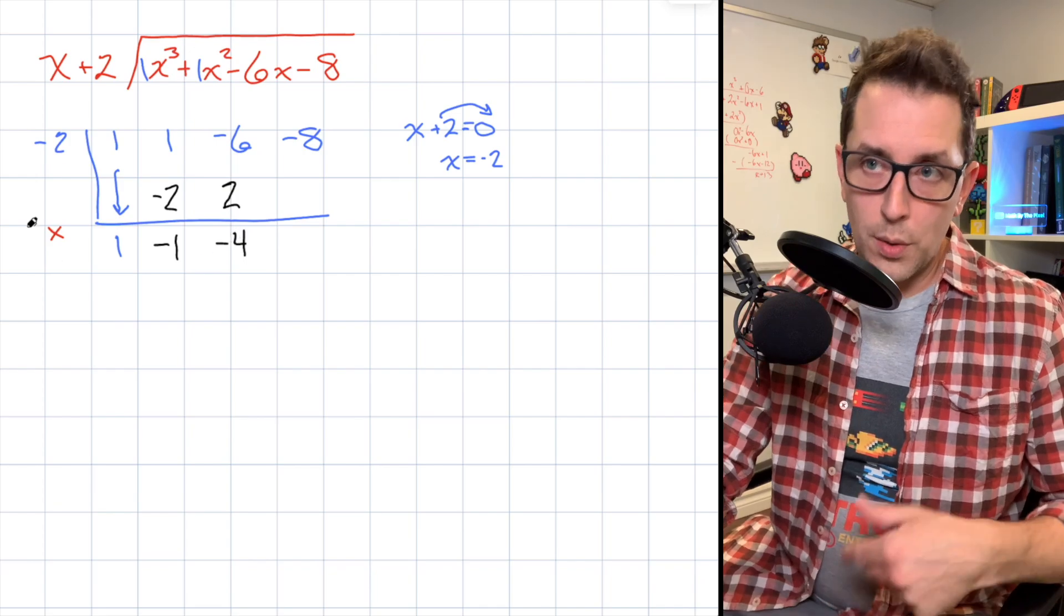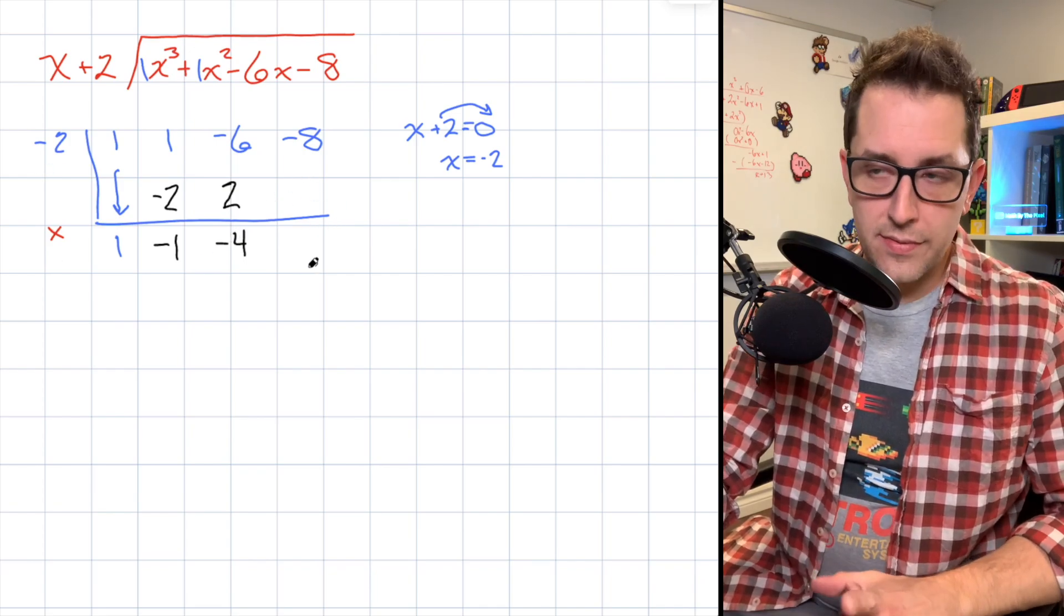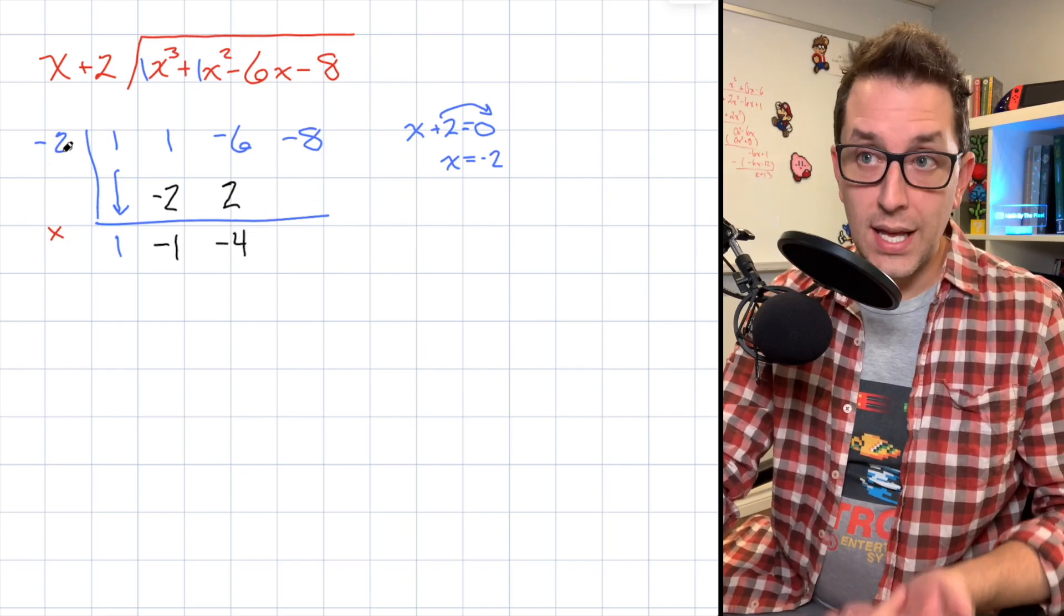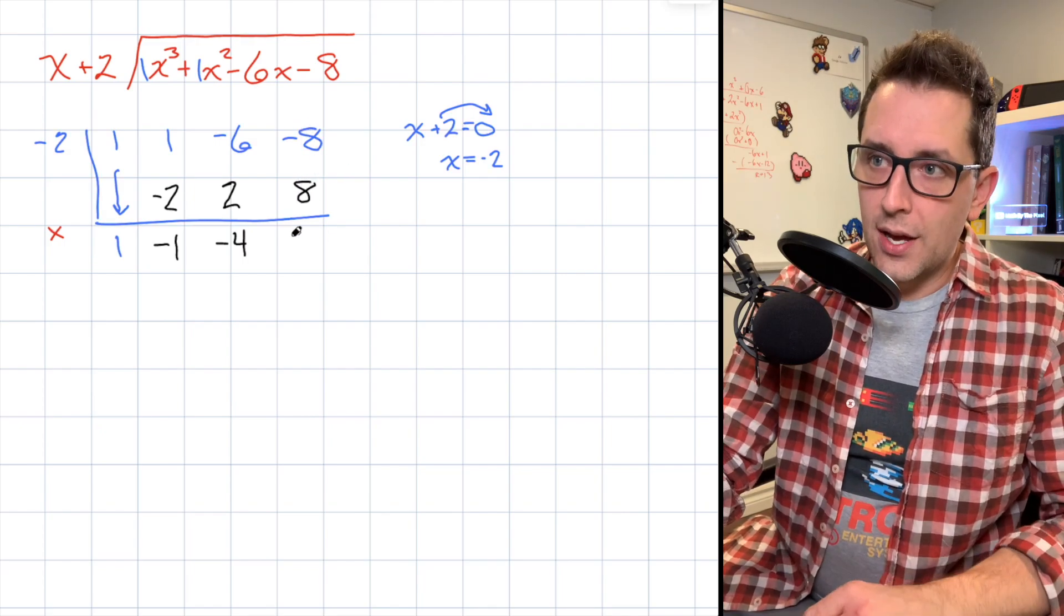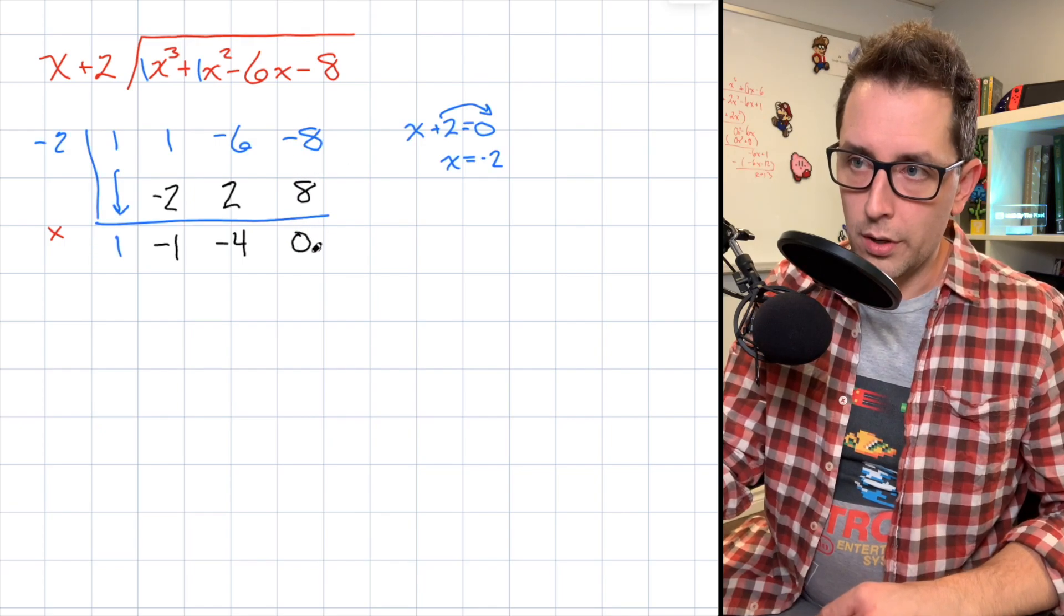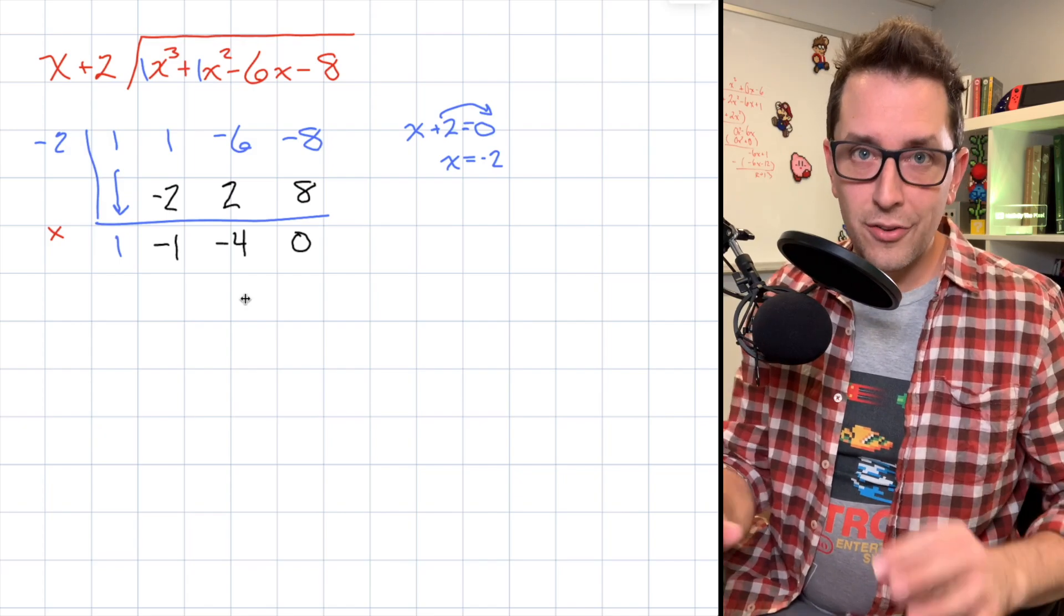I'm going to repeat that process one more time to get this last missing piece of information. So -4 times -2 is 8. So I write my 8 here, I add straight down, and you're going to see that I get zero here. That is really the entire synthetic division process.